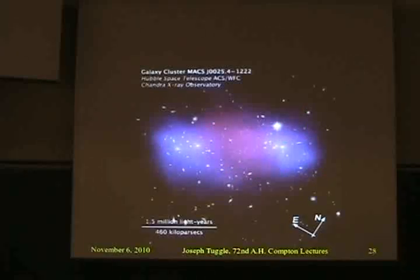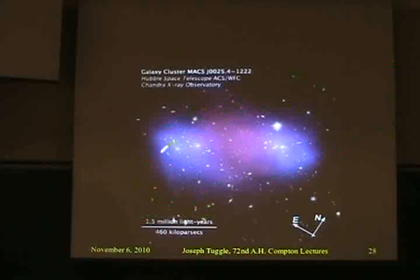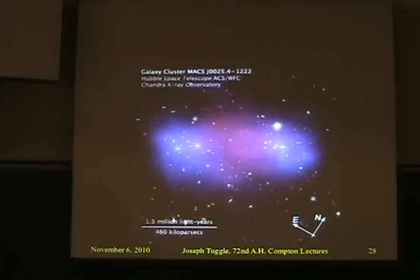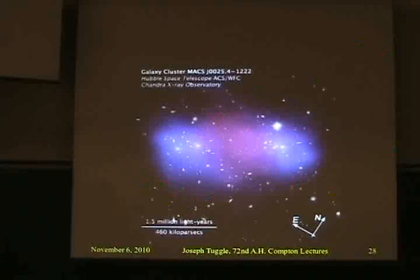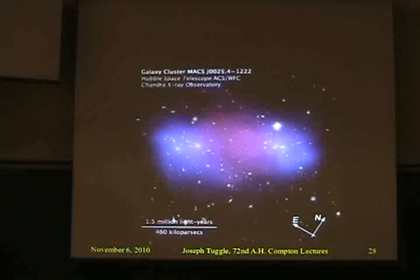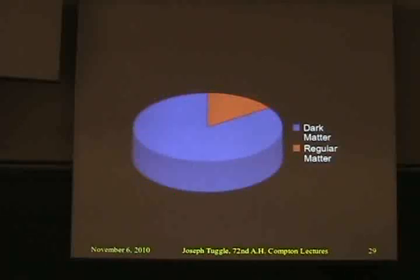Why am I harping on dark matter so much? Because it's not predicted by our Standard Model of physics. It's not in it at all. We know about 12 fundamental particles, and we're pretty sure that dark matter isn't covered by them. How much of a problem is this? If you look at all of the matter in the universe, the bit we know about is this small fraction — a huge fraction of it is dark matter. This is one of those glaring errors where everything looks great in the particle physics lab, but when you look at it in the universe, there are unanswered questions.